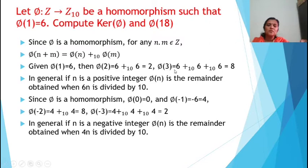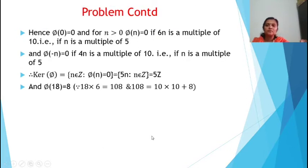Phi(3) = 6 +₁₀ 6 +₁₀ 6 = 18, and 18 mod 10 = 8, so phi(3) = 8. In general, if n is a positive integer, phi(n) is the remainder obtained when 6n is divided by 10.